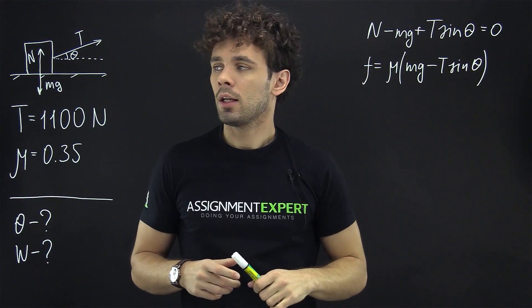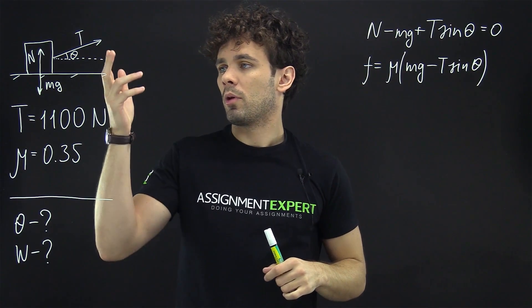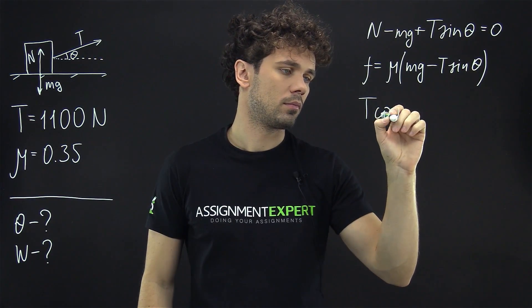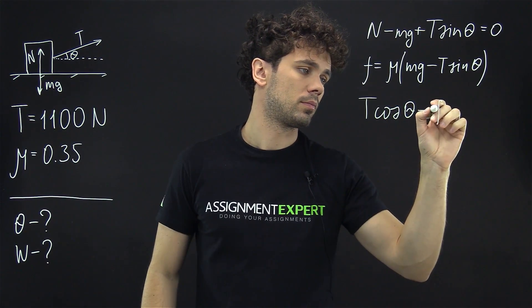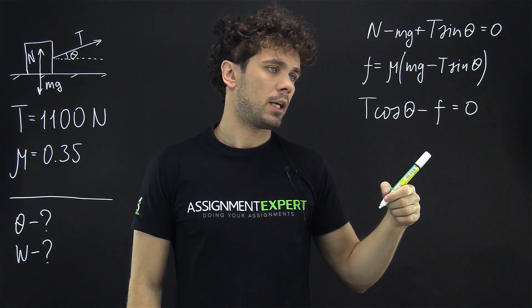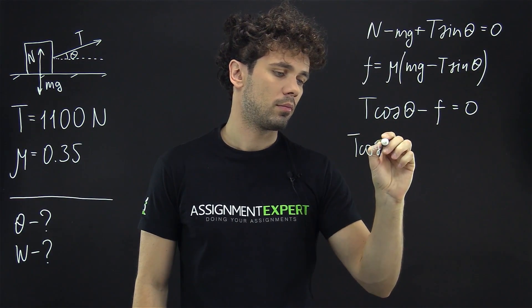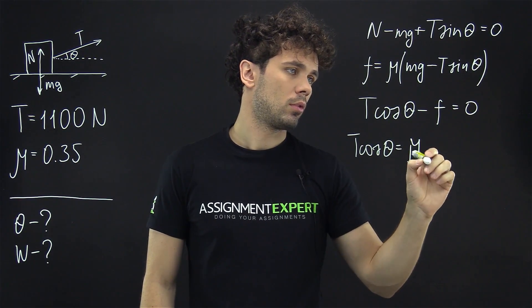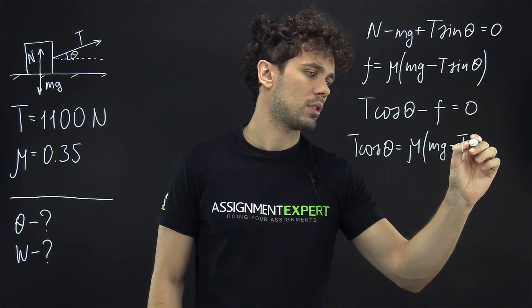Now let's consider the forces acting in the horizontal plane. We have T times cosine of theta minus force of friction. So now we move the force of friction to the other side and take this expression and we get T times cosine of theta equals mu times mg minus T times sine of theta.